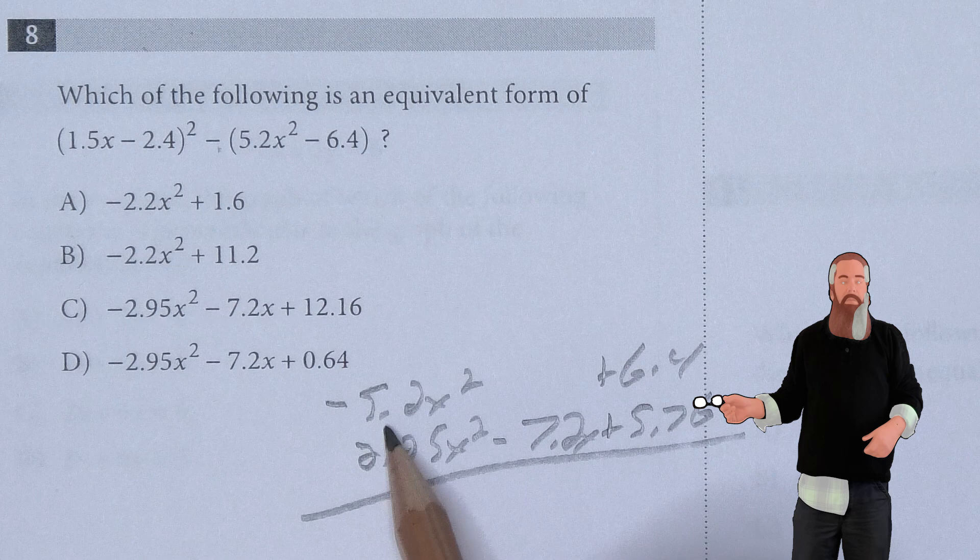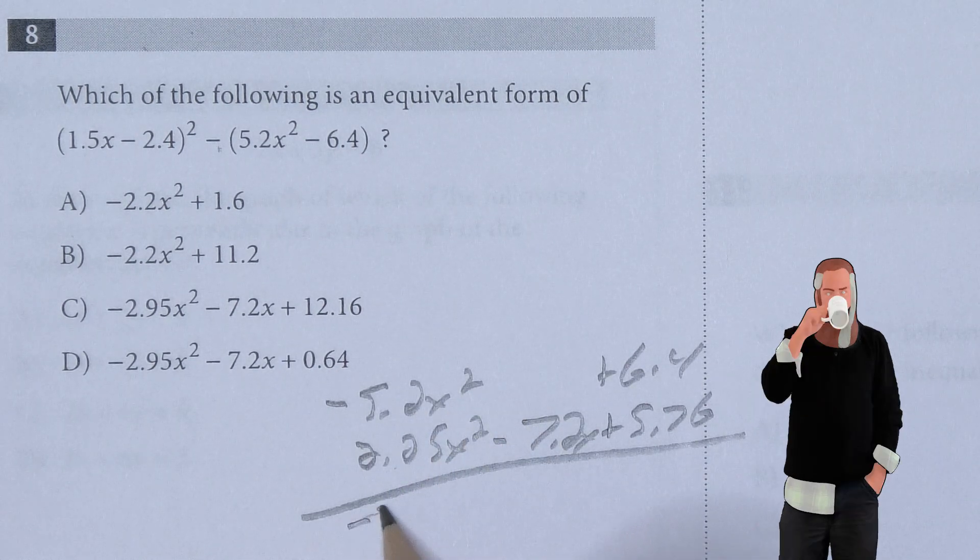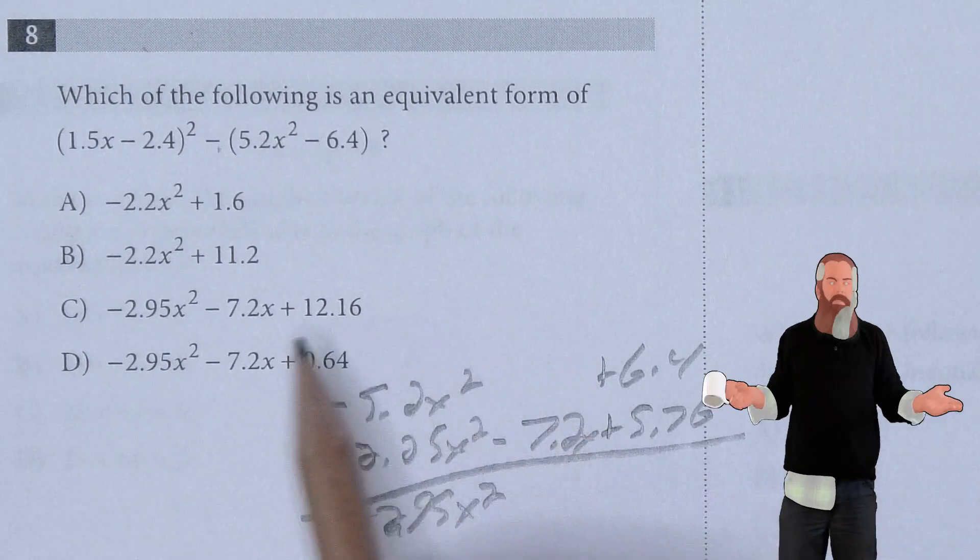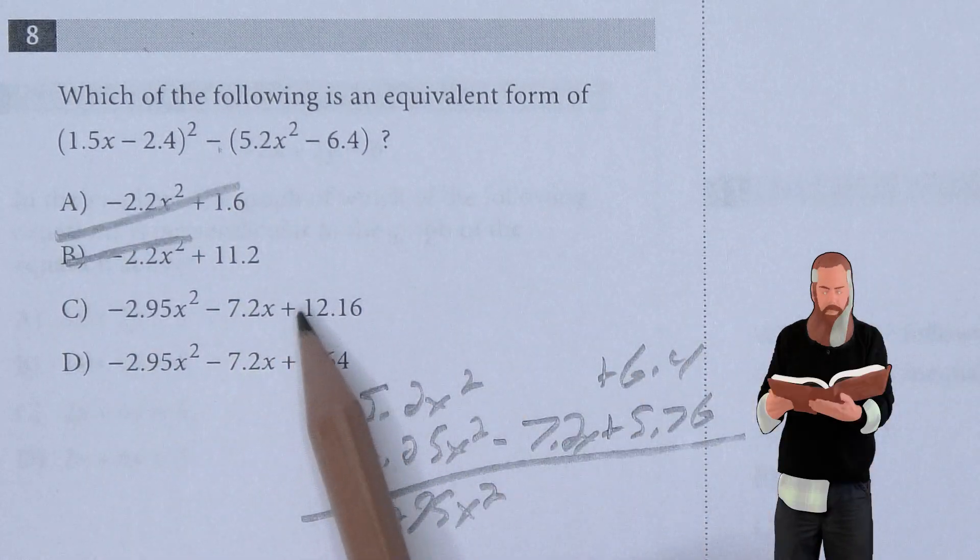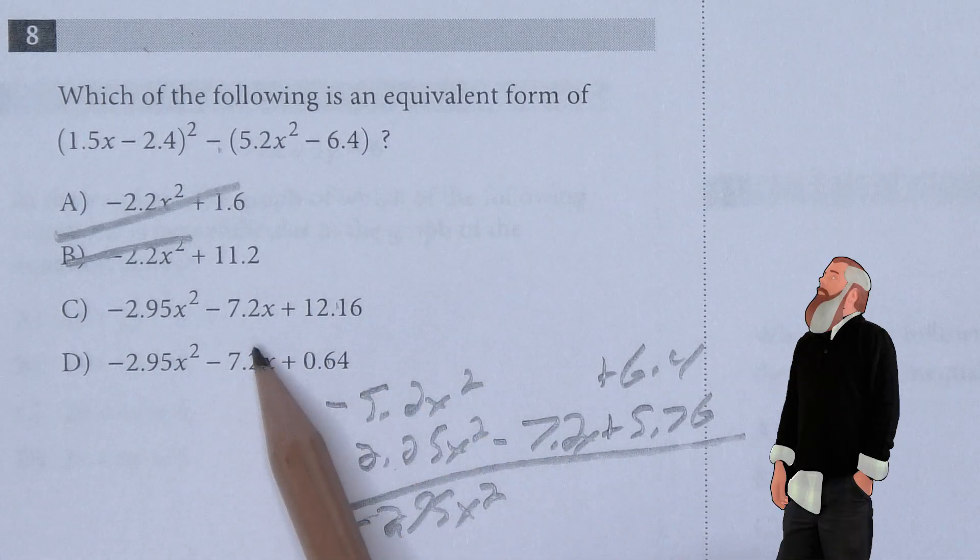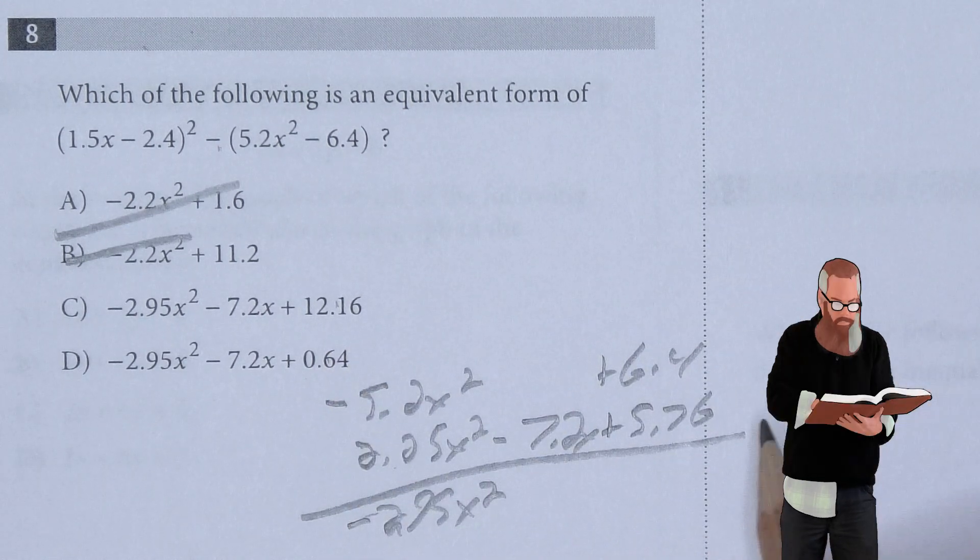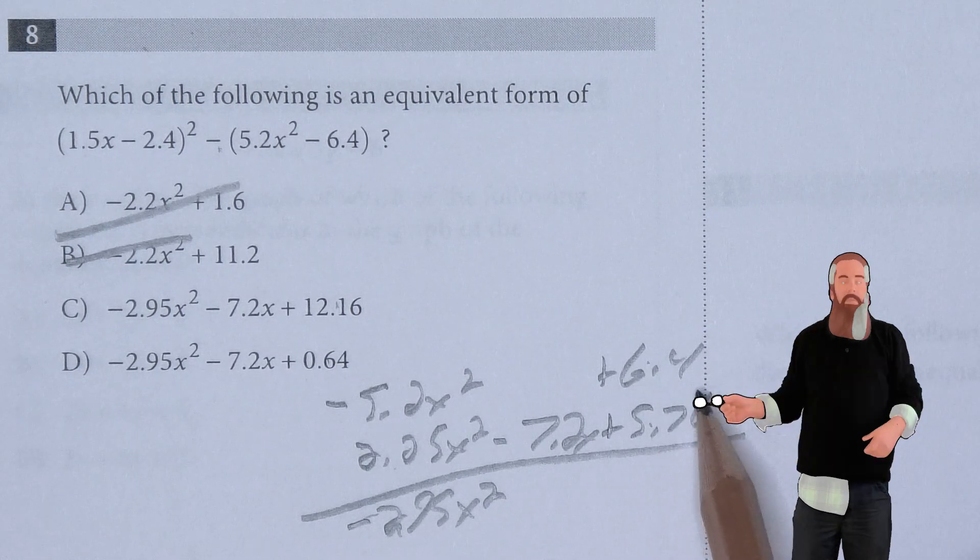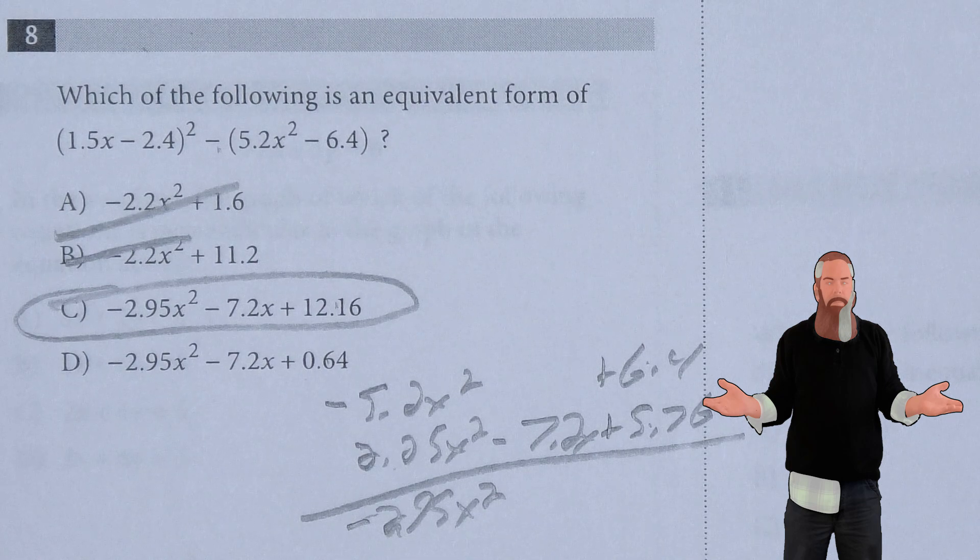Now we can add both together. The -5.2X² plus 2.25X² is -2.95X². So if it doesn't start with 2.95, I can eliminate it. I'm looking at what is different. I don't care about that -7.2X, it's in both. Am I dealing with +12.16 or 0.64? Well, 5 and 6 is 11 plus this amount means I'm dealing with a larger number than 0. So C is the answer.